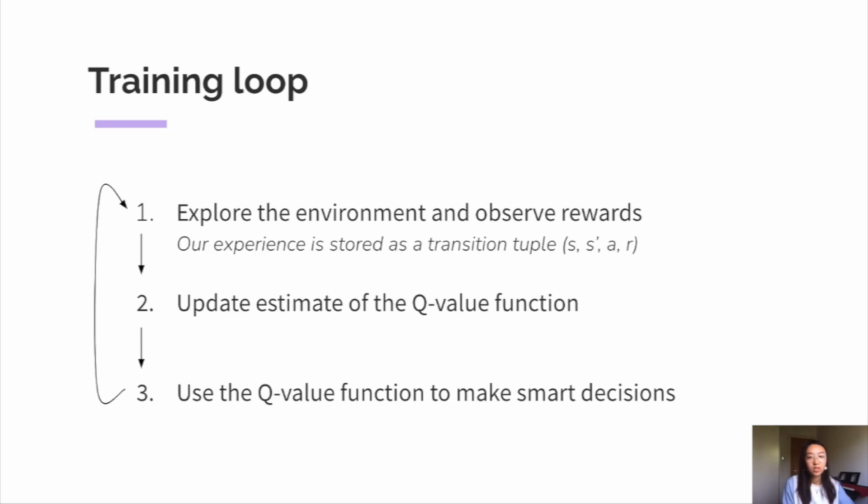And the Q-value function represents the expected return the agent receives given its current state and action. So it's able to tell us the value of taking an action in a specific state, which helps us make smarter decisions. We then repeat these three steps and gradually converge to the true Q-value function, which gives us the optimal policy.